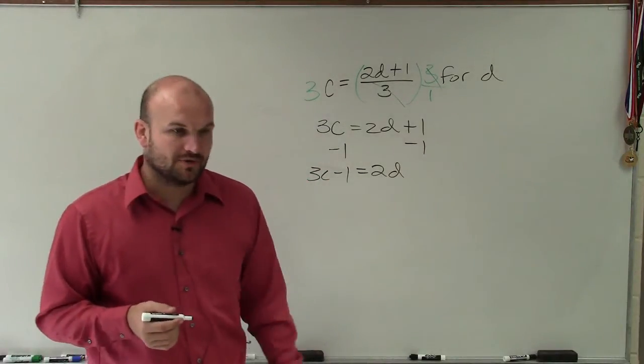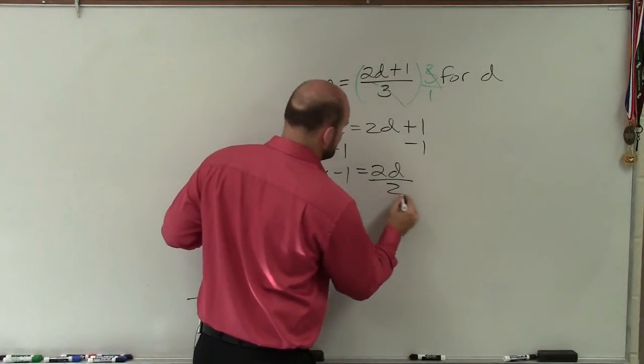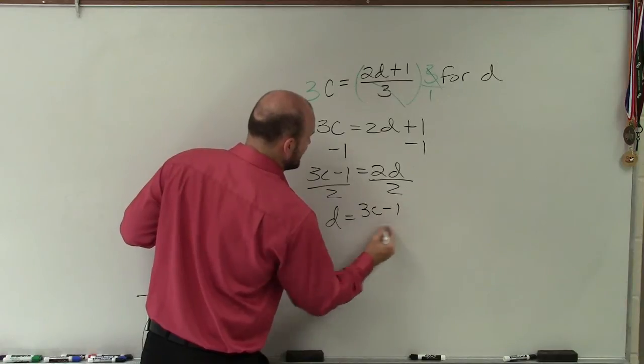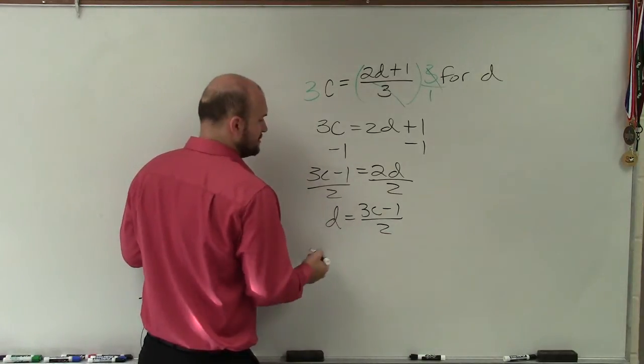Now, to undo multiplication, all I'm simply going to do, multiplication by 2 is divide by 2 on both sides. So d equals 3c minus 1 divided by 2.